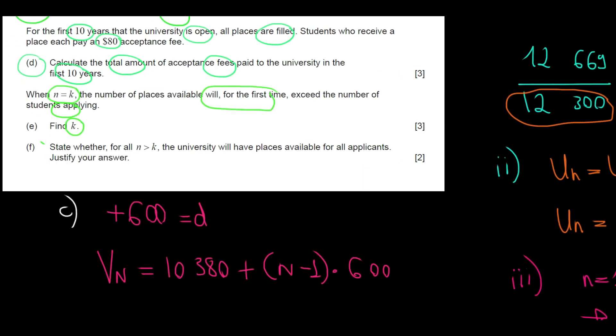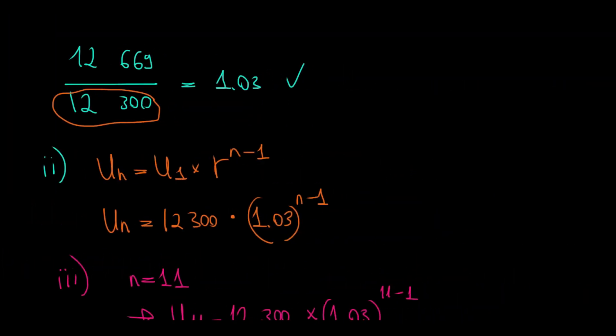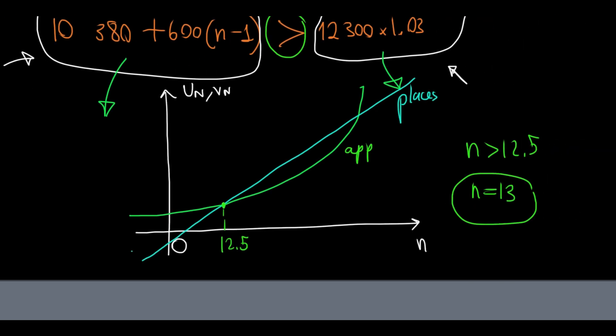State weather for all n above k. The university will have places available for all applicants. Justify your answer. Okay, well, in this case, we want to see if we will have such a threshold, where beyond that threshold, we will always have the number of places of the university exceeding the number of applicants. And the answer is no. Why is that?